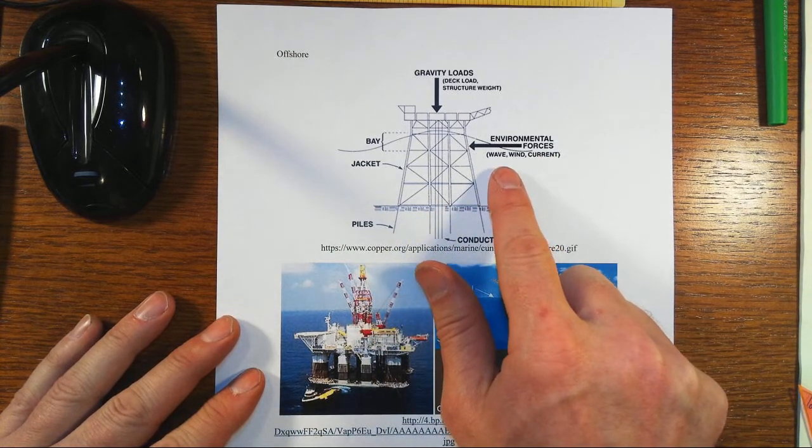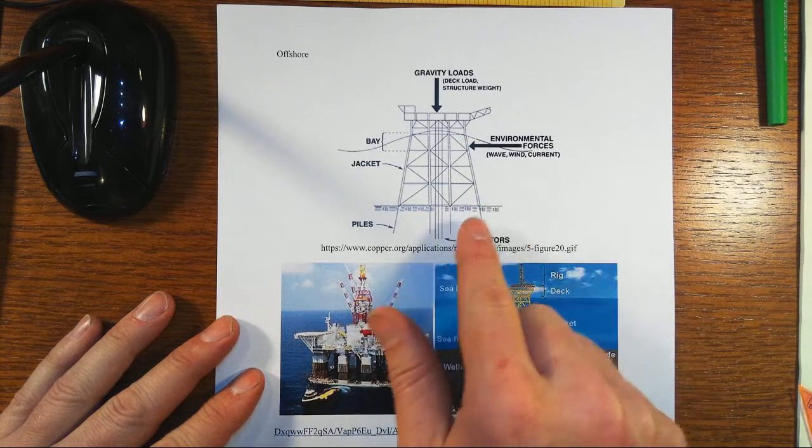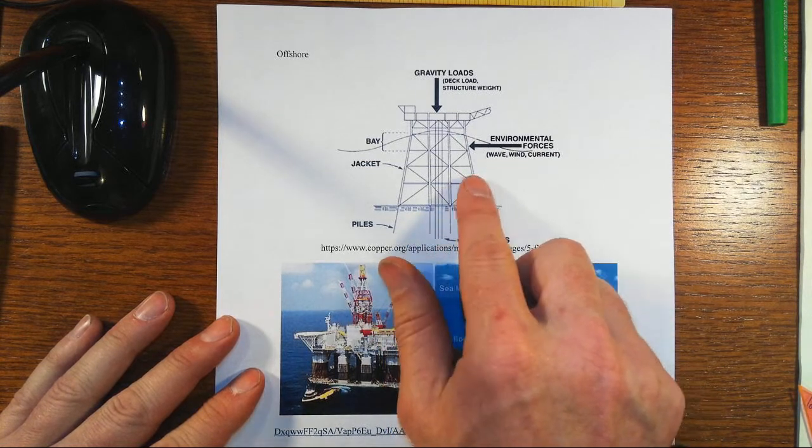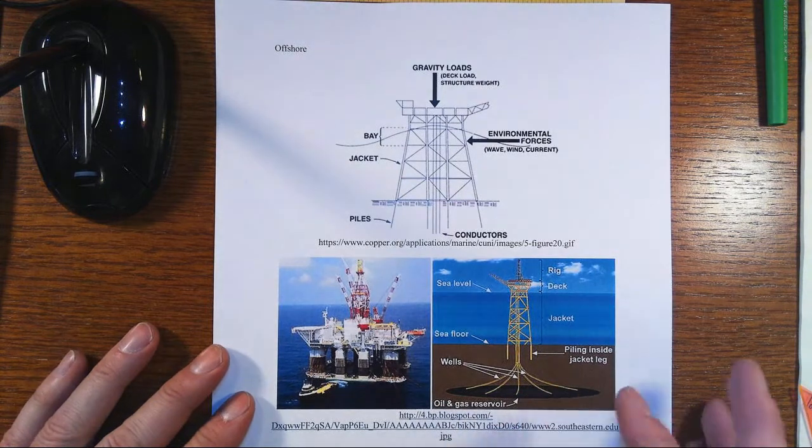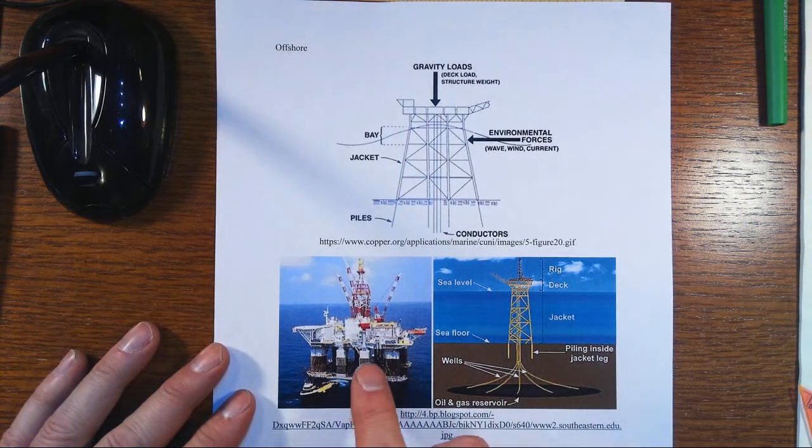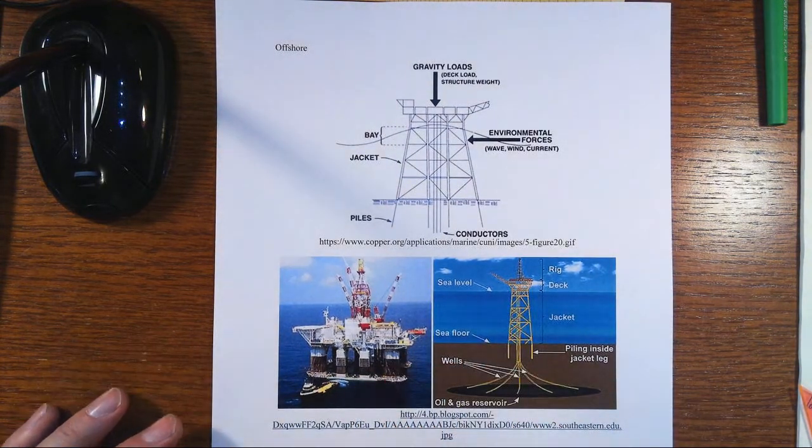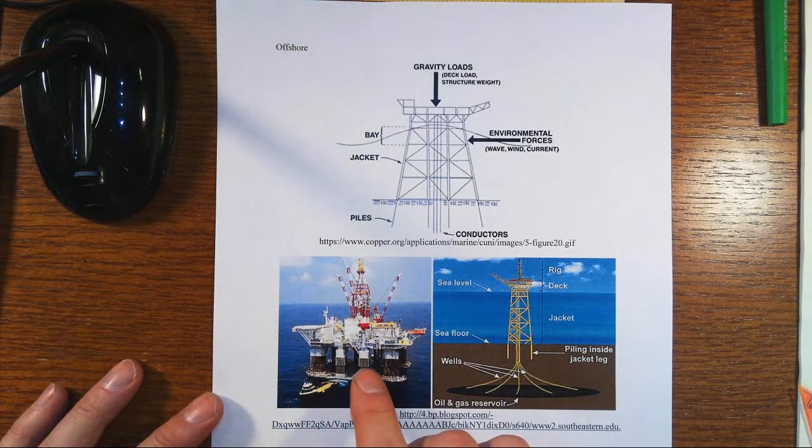Especially out in the ocean we have wave, wind, and current types of environmental forces. The wave and the current are the fluid type forces that you see here, and down below you see an example of what one of these offshore platforms might look like.